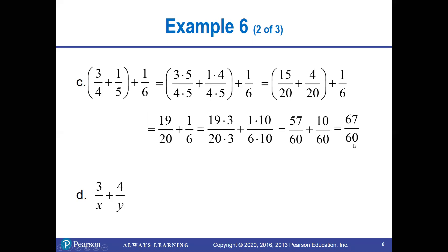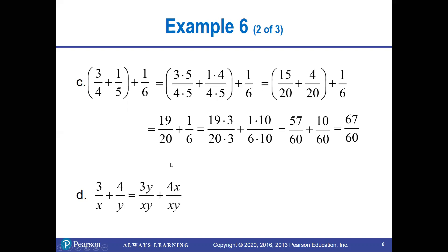For problem d with variables, the common denominator would be xy, so you multiply the first fraction by y and the second by x. When we add, we keep the denominator xy on the bottom and get 3y + 4x on top. This will not reduce any further.